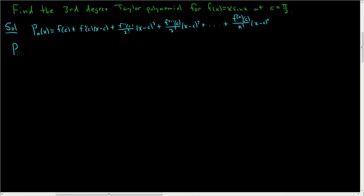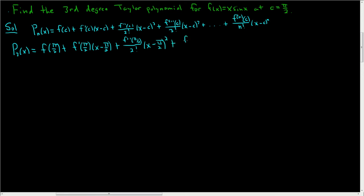In this problem our answer will look like: f of pi over 2, since our c is pi over 2, plus f prime of pi over 2 times x minus pi over 2, plus f double prime of pi over 2 over 2 factorial times x minus pi over 2 squared, plus f triple prime of pi over 2 over 3 factorial times x minus pi over 2 cubed.